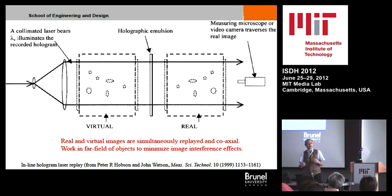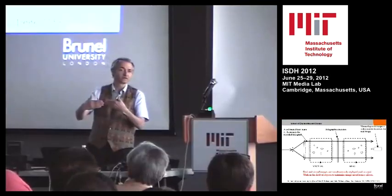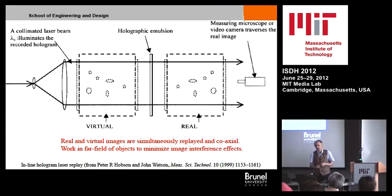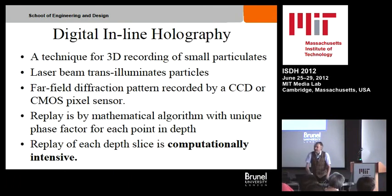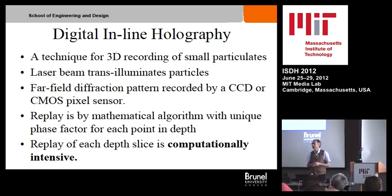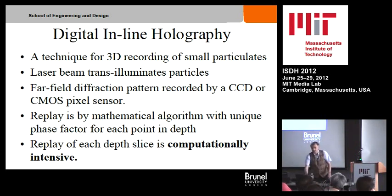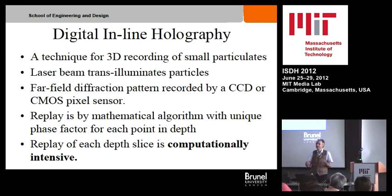It's not that you can't make an inline hologram with slightly more macroscopic objects, but then you get horrible interference between the simultaneously replayed real and virtual images, which have pseudoscopic and orthoscopic geometry. In my world, digital inline holography is where you record on a digital pixel sensor — so far that's been a CCD or CMOS device, though it doesn't have to be. In terms of recording, all you're doing is replacing the holographic film or plate with a semiconductor pixel sensor, and replaying by essentially computer-based algorithms. The replay of each depth slice is highly computationally intensive. Thanks to the speaker who ended the previous session for going in great detail through all the mathematical formulation, so I don't have to.